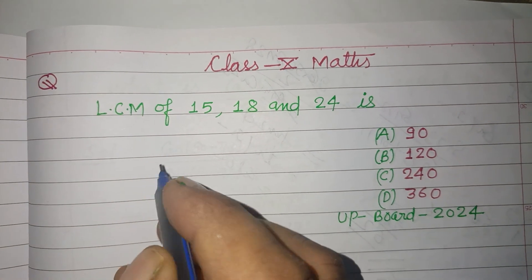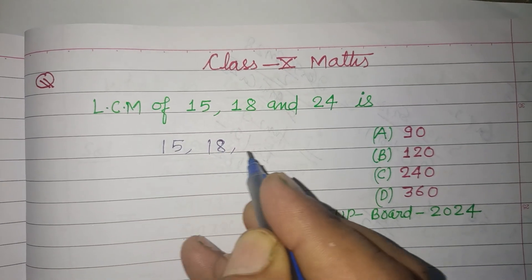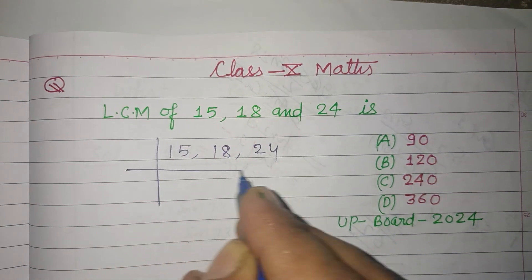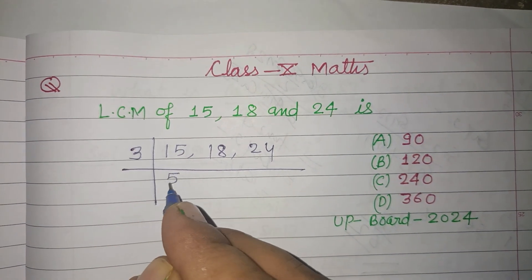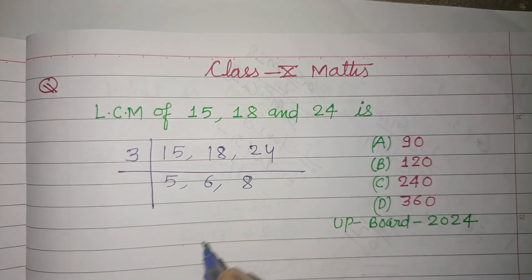So students, we're getting LCM by the division method. 15, 18, 24. We can obtain this LCM. First we divide it by 3. 3 into 15 is 5, 3 into 18 is 6, 3 into 24 is 8.